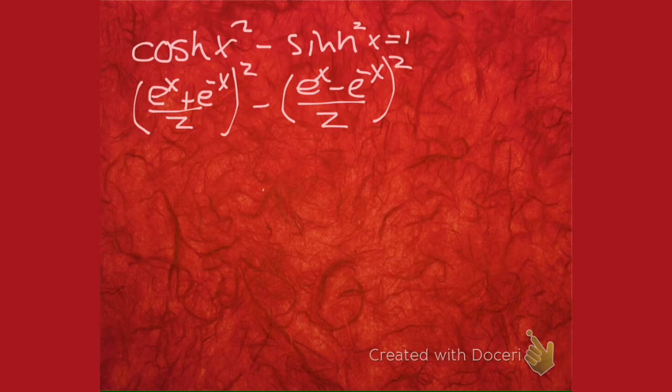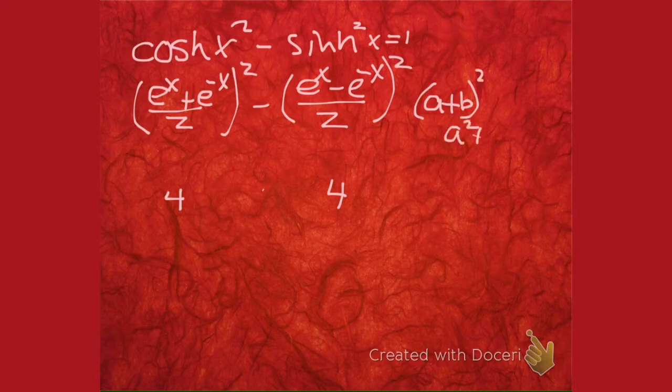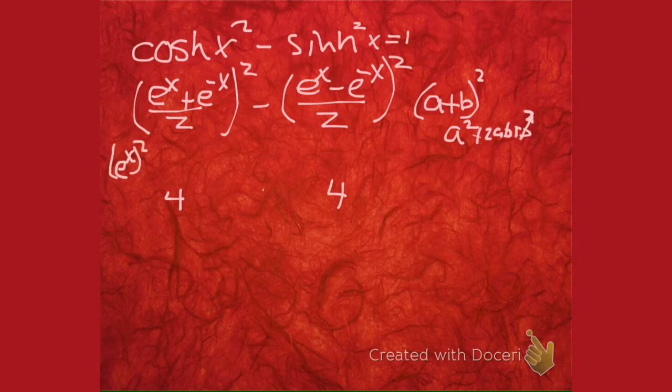So we're going to multiply those guys out. That's an over 4 and that's an over 4. But before I bore you, I'm looking at a plus b squared. That's a squared plus 2ab plus b squared. That b squared got off the page. So that's what I'm going right here. I'm doing e to the x squared plus 2e to the x e to the minus x plus e to the minus x squared all over 4.